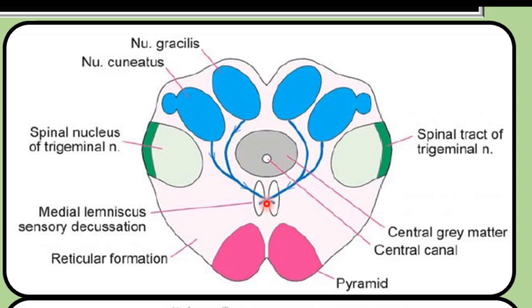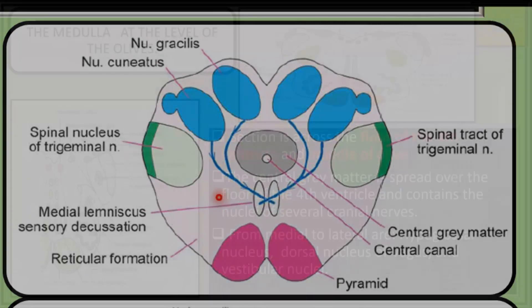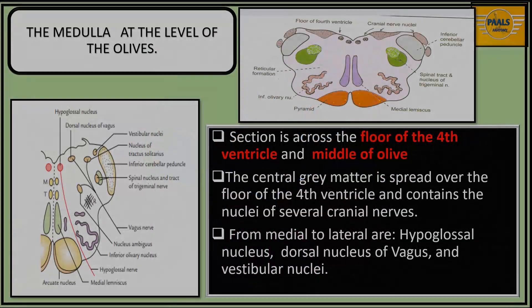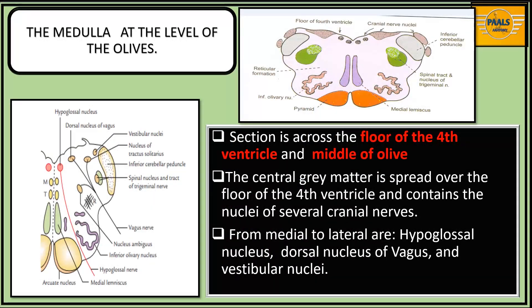Lateral to the medial lemniscus is the region of the reticular formation. We now get to the third level, which is the level of the olive.